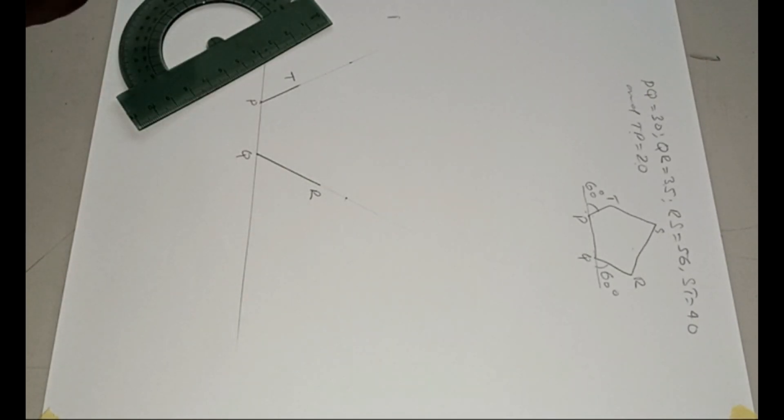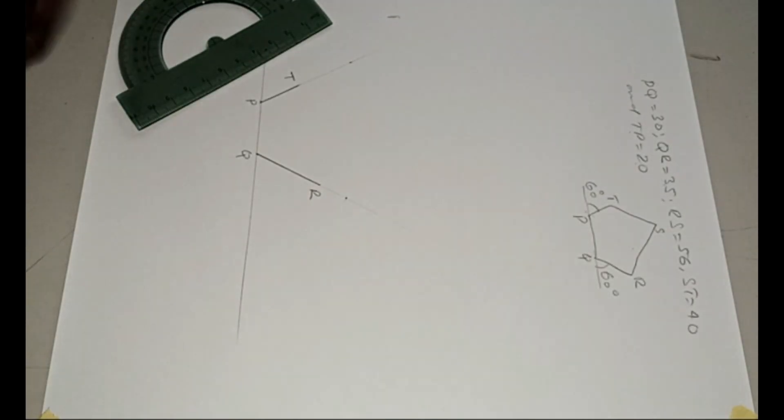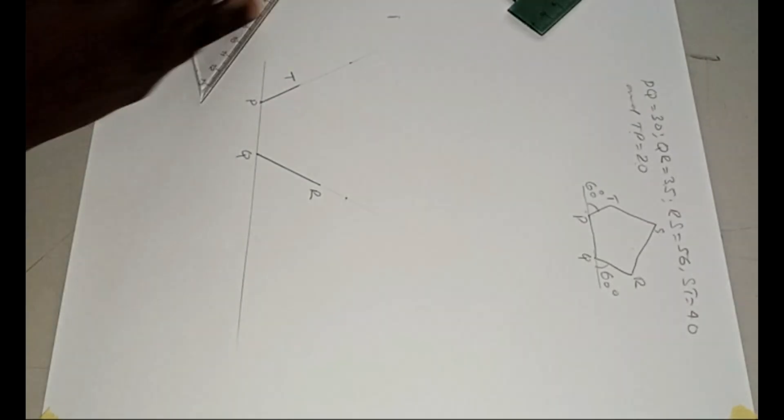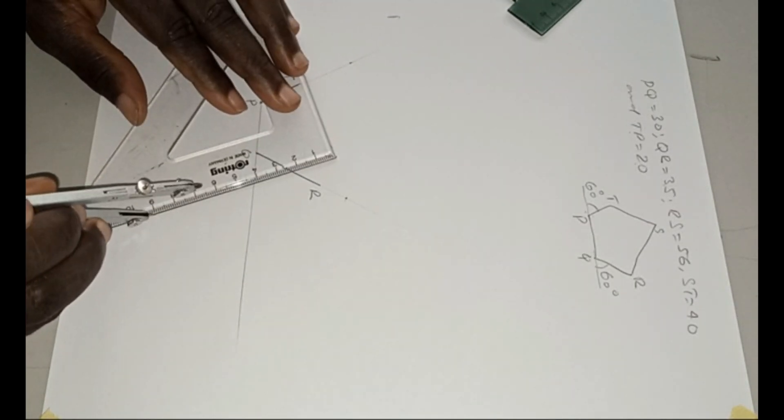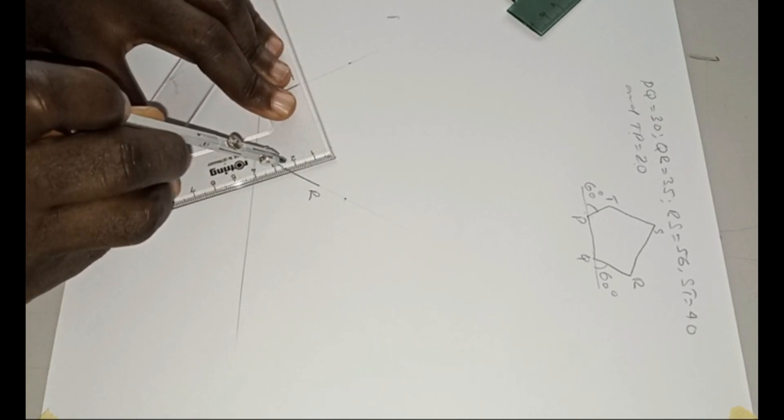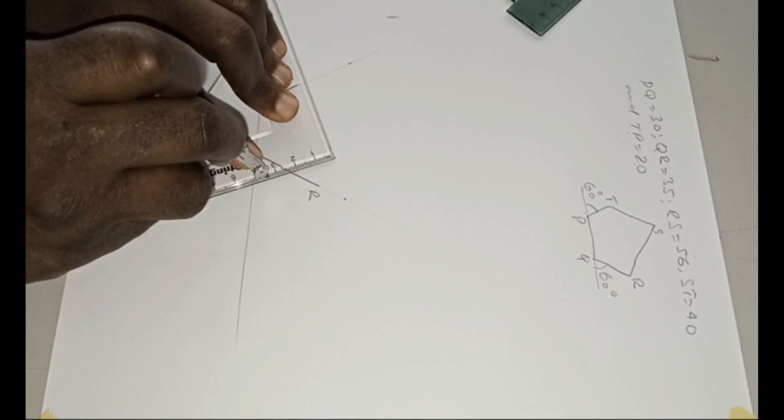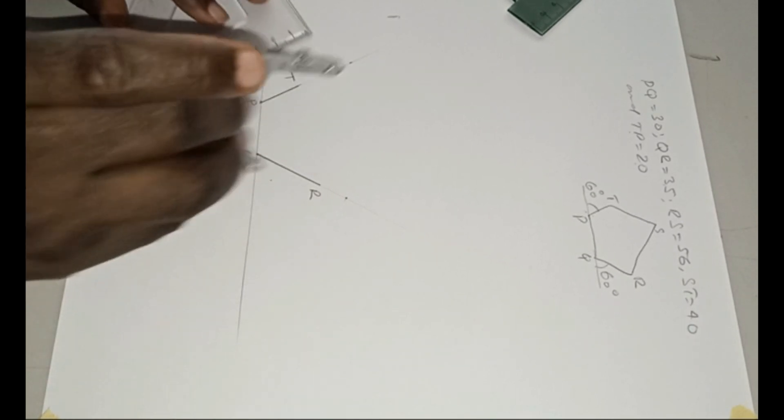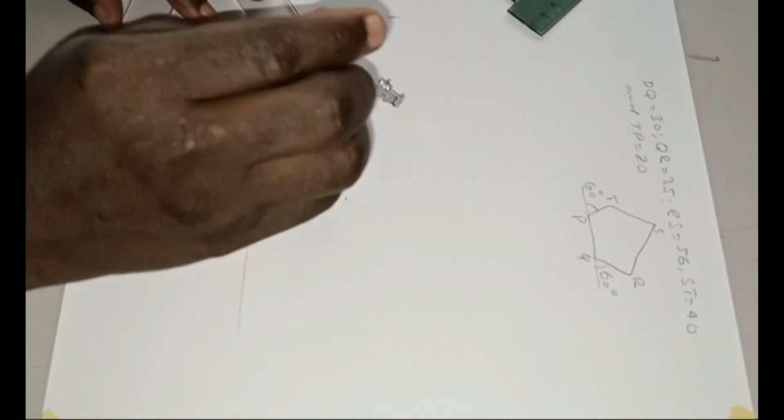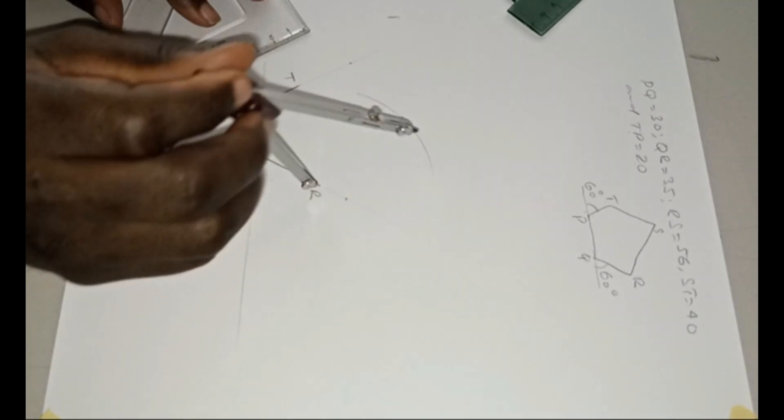So what is SR? Our SR according to the question is 56. So you measure 56 on your compass: 20, 30, 40, 50, 56 is somewhere here. So you come to R and mark an arc. You describe an arc like that.